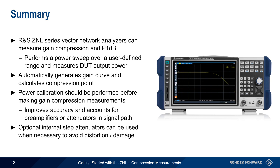And finally, optional internal step attenuators are also available for the ZNL, and these can be used to help reduce the risk of distortion or damage when making measurements on devices with high output power levels. This concludes our presentation on getting started with the ZNL compression measurements. If you'd like to learn more about compression measurements, other Vector Network Analyzer measurements, or VNAs from Rohde & Schwarz, please see the links in the video description. Thanks for watching.